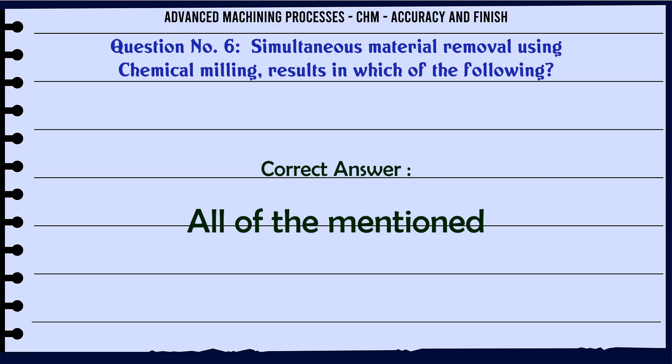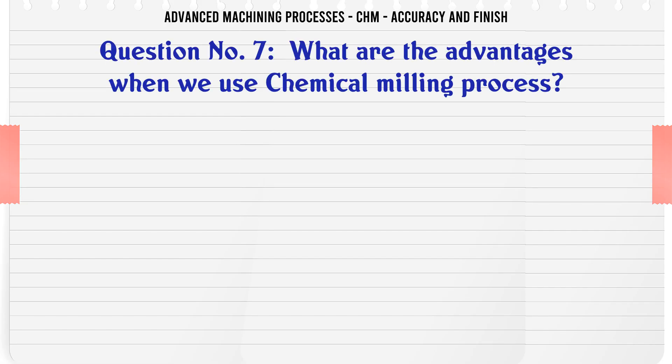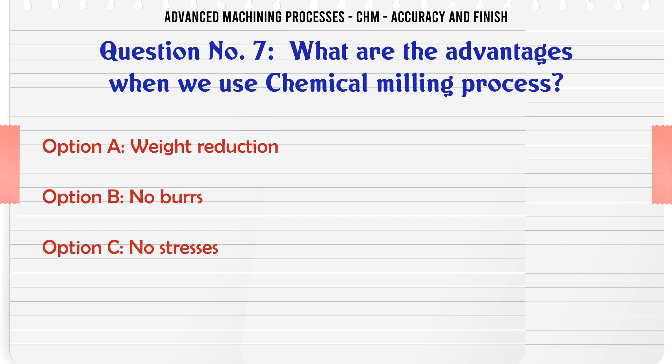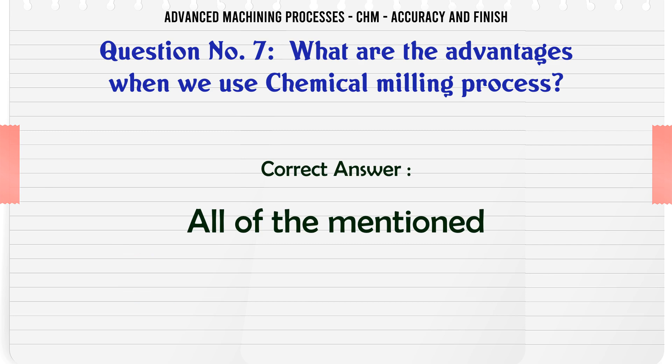What are the advantages when we use the chemical milling process? A. Weight reduction. B. No burrs. C. No stresses. D. All of the mentioned. The correct answer is all of the mentioned.